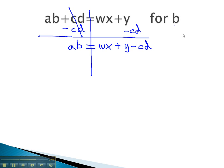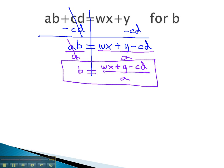Remember, our goal is to solve for b. We want to get the b alone. To do that, we need to get rid of the a. The opposite of multiplying by a is dividing both sides by a. As we do, the a's divide out, and we're left with b alone on the left side of the equation. The right side is an expression, wx plus y minus cd, all over a. This is our final solution.